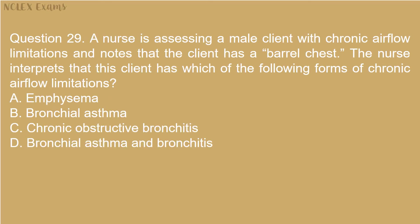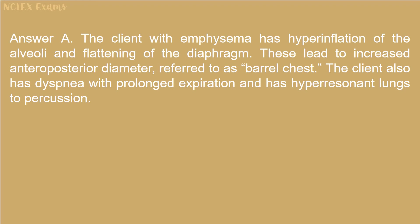Question 29: A nurse is assessing a male client with chronic airflow limitations and notes the client has a barrel chest. The nurse interprets this client has which form of chronic airflow limitations? A) Emphysema, B) Bronchial asthma, C) Chronic obstructive bronchitis, D) Bronchial asthma and bronchitis. Answer A. The client with emphysema has hyperinflation of the alveoli and flattening of the diaphragm, leading to increased anterior-posterior diameter referred to as barrel chest. The client also has dyspnea with prolonged expiration and hyperresonant lungs to percussion.